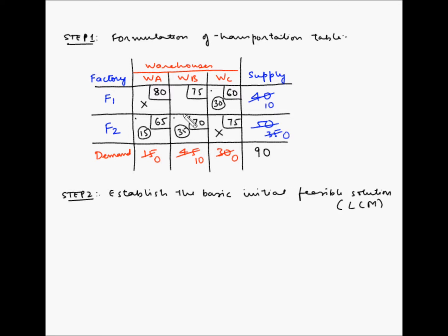Only one cell remains: F1 to WB. F1 has a remaining supply of 10 units, and WB has a remaining demand of 10 units. Supply and demand are equal, so we allocate 10 units here. With this allocation, the remaining demand at WB becomes 0 and the supply at F1 also becomes 0. All supply and demand has been allocated, giving us our initial basic feasible solution using the least cost method.